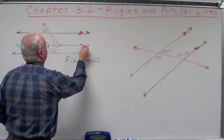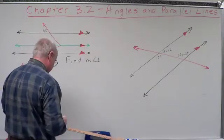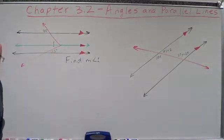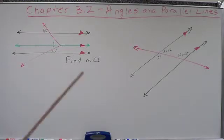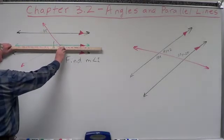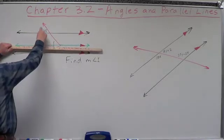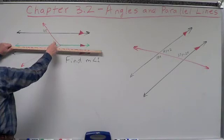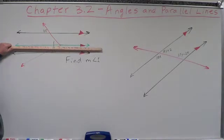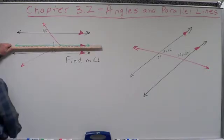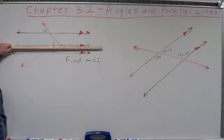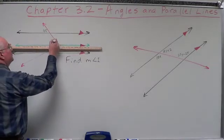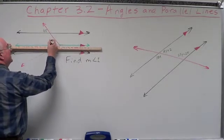Let's put our indication here that this is a parallel line so we know that. Now let's look at these and determine what our relationships are. We have this set of parallel lines — the green one and the black one up here. This angle and this angle are corresponding angles. Corresponding angles of parallel lines are congruent, and that means their measures are equal. So this angle right here is 45 degrees.